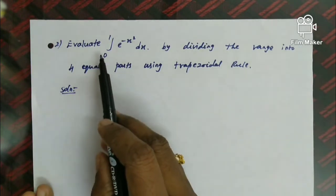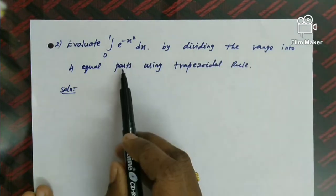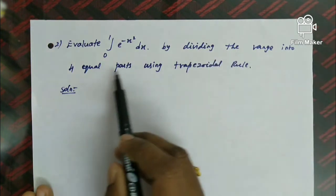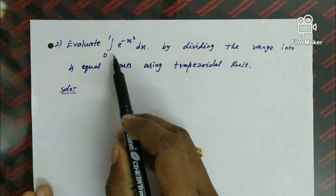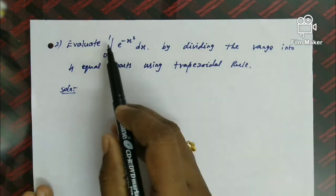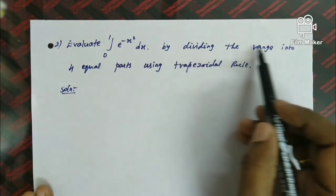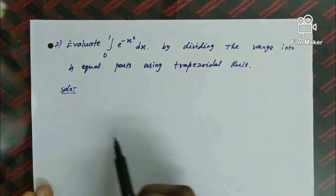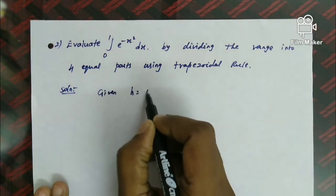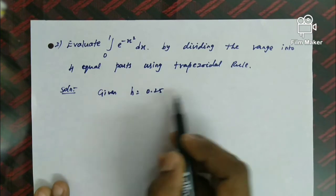Second question: evaluate the integral from 0 to 1 of e^(−x²) dx by dividing the range into 4 equal parts using the Trapezoidal Rule. Since the range is 0 to 1 divided into 4 equal parts, h = (1−0)/4 = 1/4 = 0.25.